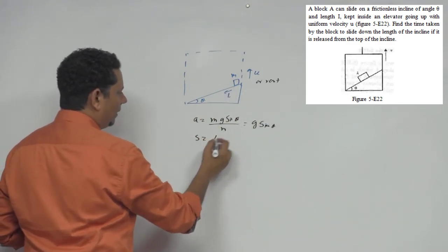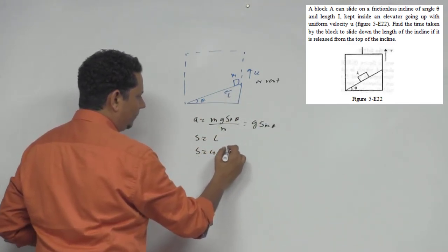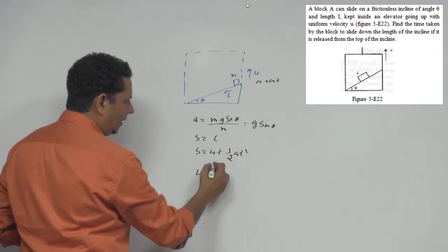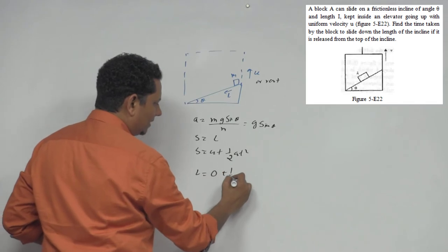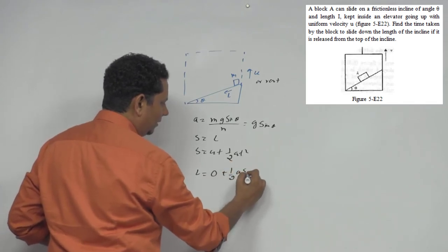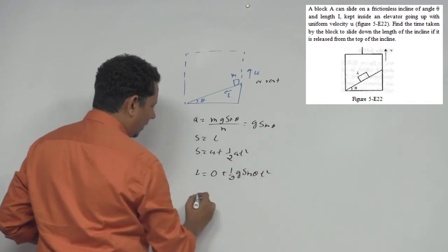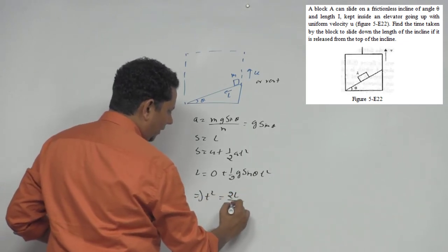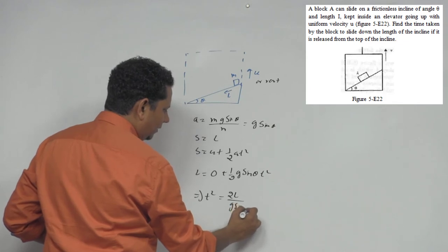The distance traveled is L, so using s equals ut plus half a t squared, s is L, initial velocity is 0, plus half a which is g sin theta t squared. This gives t squared equals 2L divided by g sin theta.